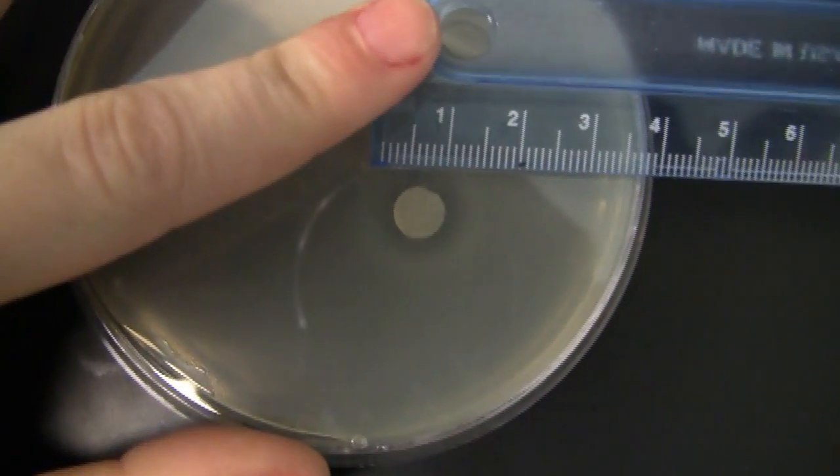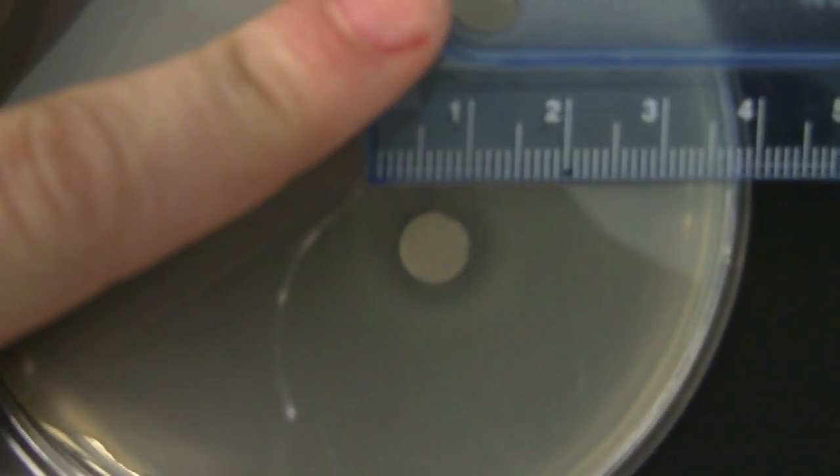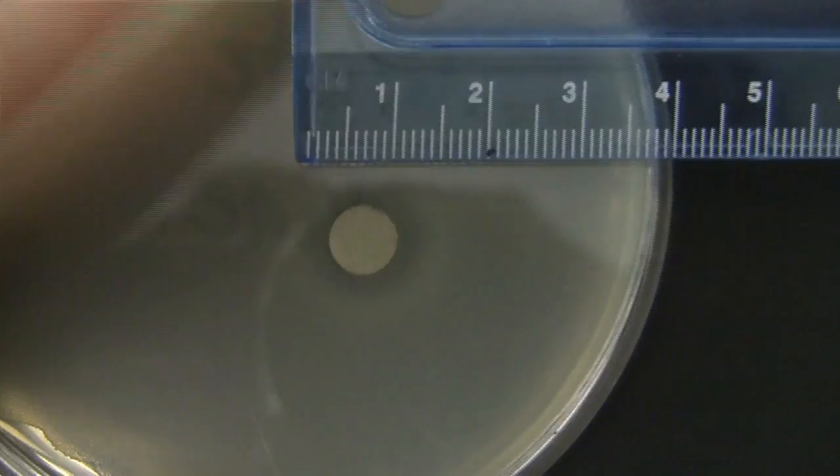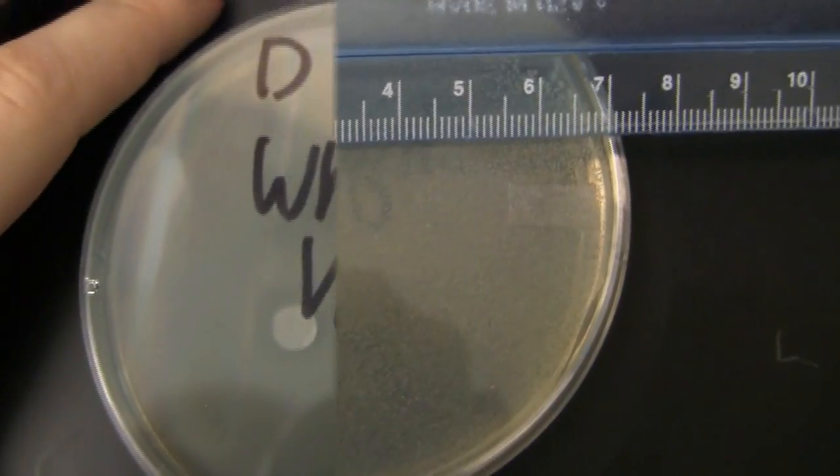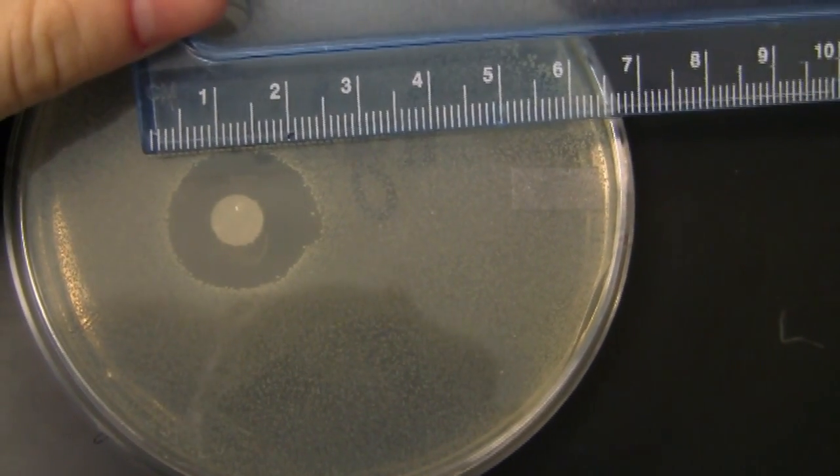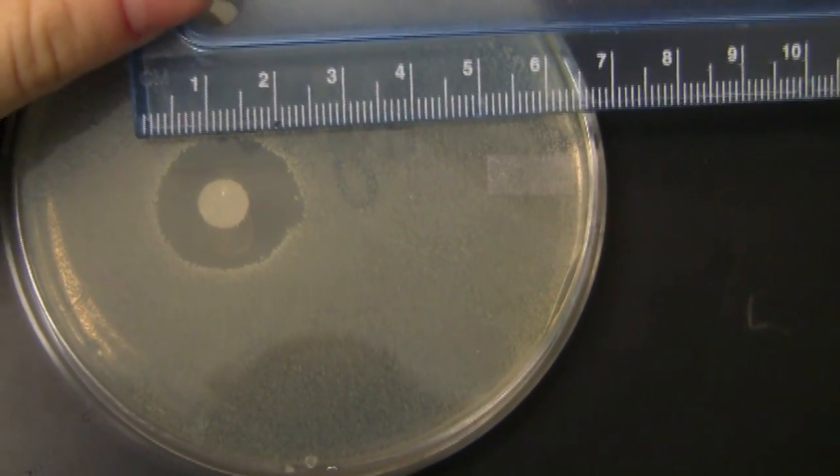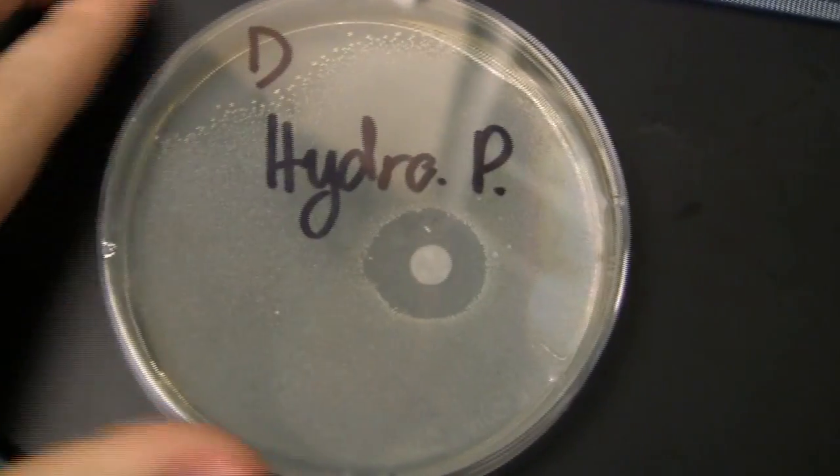Take note of the haziness of this zone of inhibition. This is the petri dish belonging to the distilled white vinegar. Here is the hydrogen peroxide. As you can see, there is a clear zone of inhibition and small white colonies bordering it.